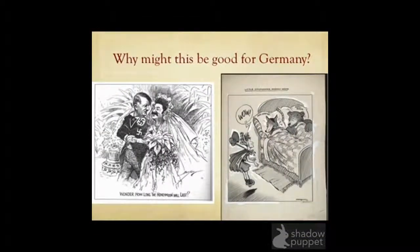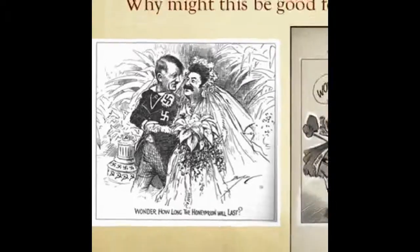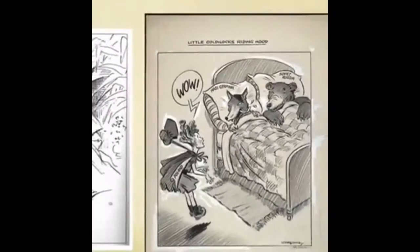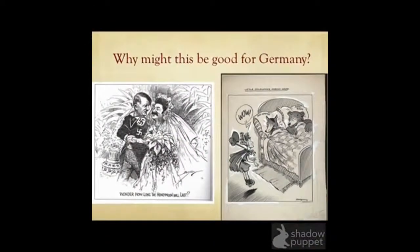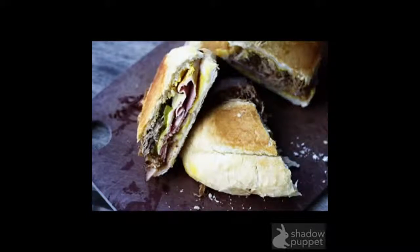Why might this pact be good for Germany? Looking at the political cartoons — one asking "Wonder how long the honeymoon will last?" and another depicting Little Goldilocks Riding Hood — Germany doesn't have to face the large Soviet Red Army. If Germany decides to take lands in the west, or continue taking lands in the east, they don't have to worry about waging a two-front war. This basically leaves Poland like a sandwich stuck in the middle of a backpack — at one point fluffy and full, but the weight pressing in from both sides flattens and crumbles it apart.